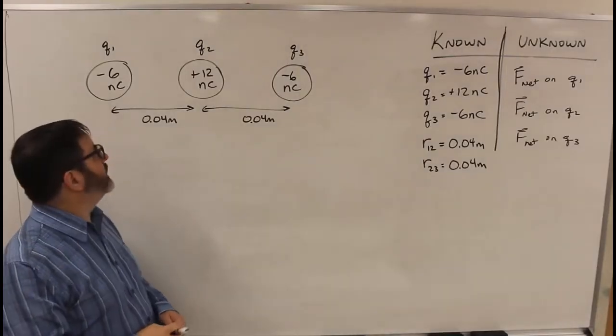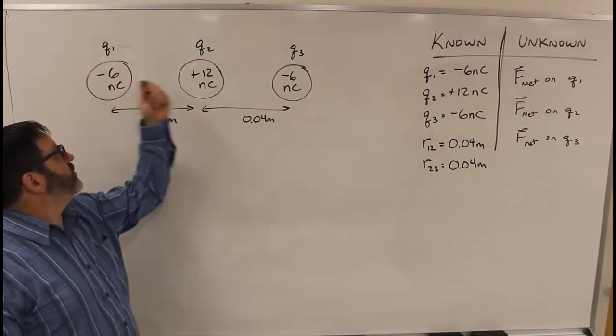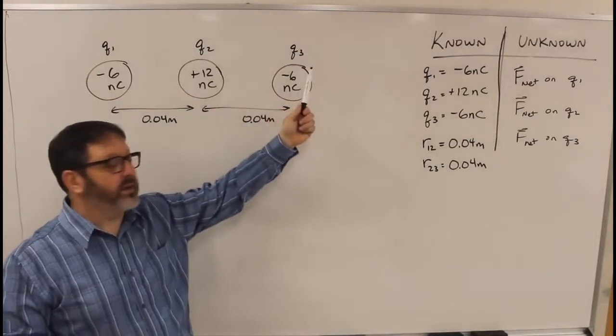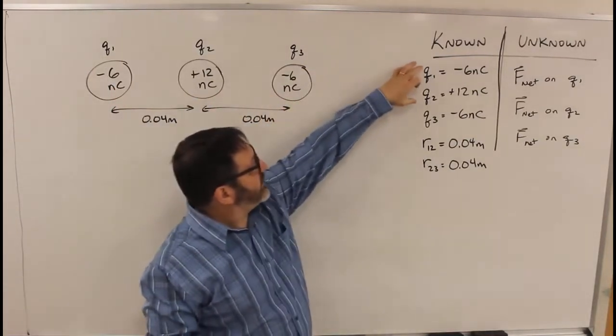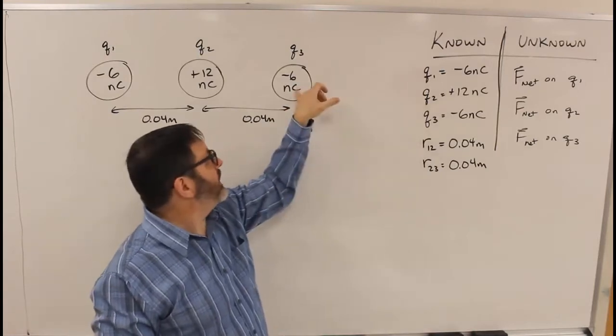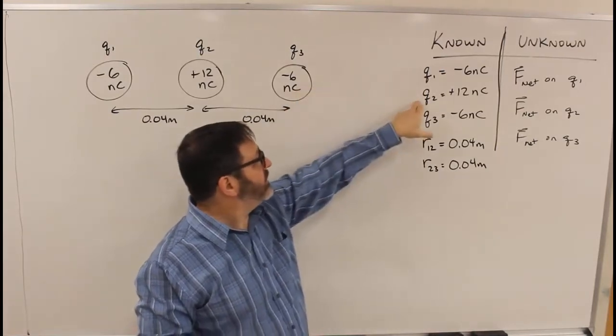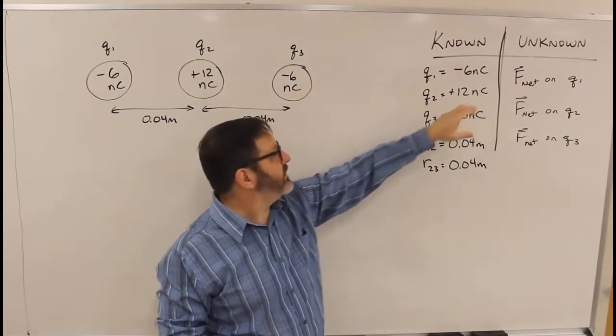So here I've redrawn the figure, giving them labels Q1, Q2, and Q3. My knowns: I know that Q1 and Q3 are both negative 6 nanocoulombs. Q2 is plus 12 nanocoulombs.